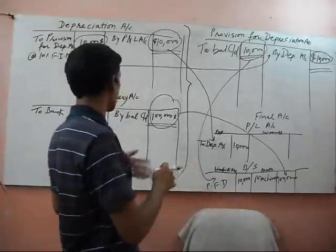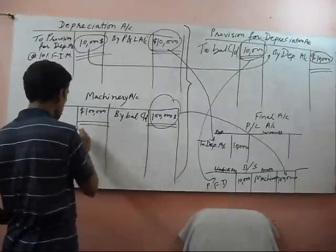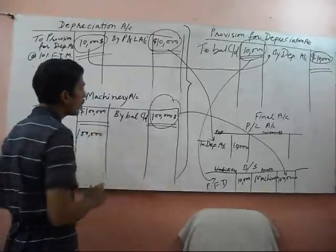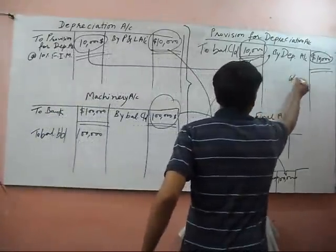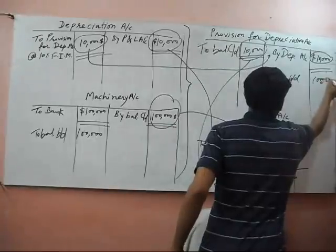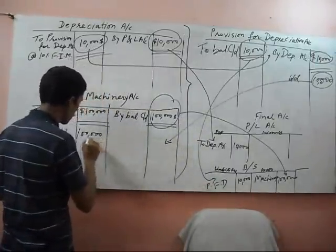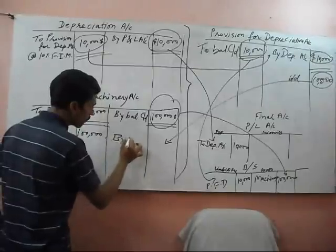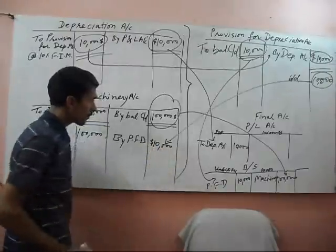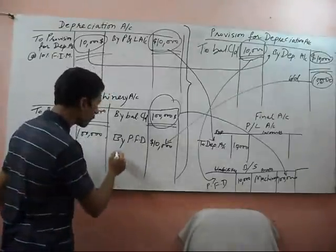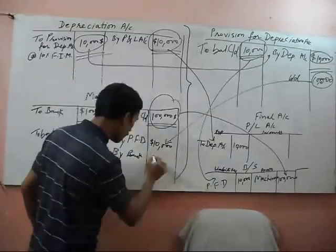Next year, if we sell the machine — suppose the balance brought on — we first of all transfer the 10,000 dollar provision for depreciation amount to the machinery account by provision for depreciation account. This is 10,000 dollar. And if we sell the machine to the bank with one lakh,